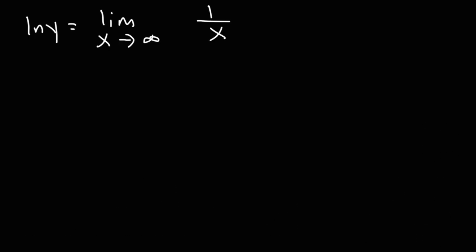At this point, we could use direct substitution. The limit as x goes to infinity of 1 over x is 0. 1 divided by a very large number is going to give us a very small number. So, 1 over infinity is virtually 0. So, we have ln y is equal to 0.